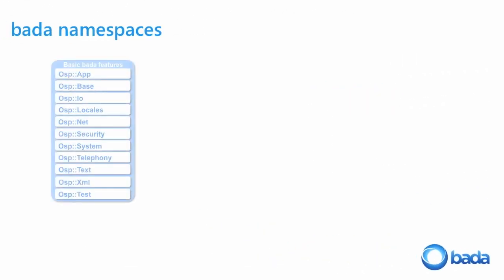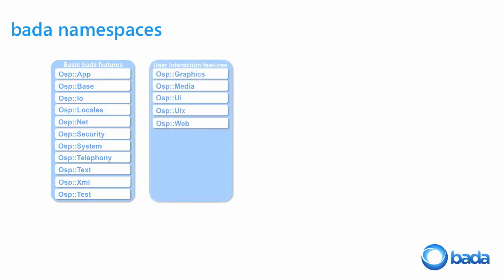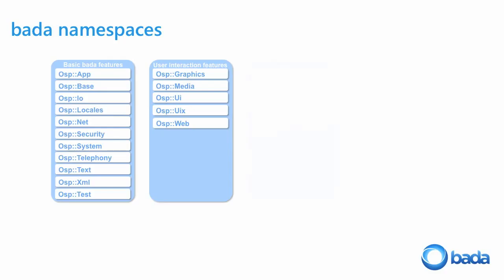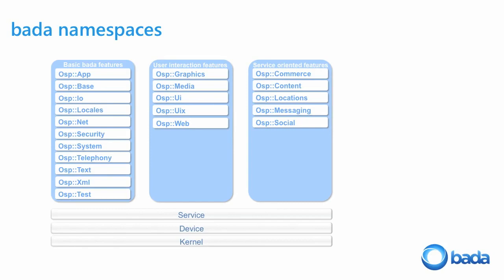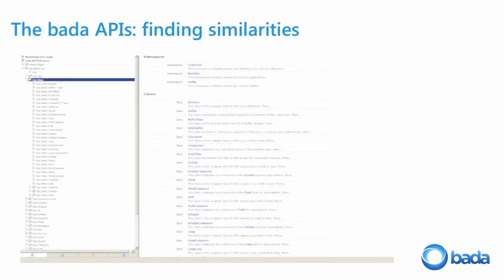Looking at the namespaces: Application, Base, Locales, and Security form the basic features. Then we have user interface features. UIX is the extended features namespace, covering things like face recognition and sensors. Finally, there are the service-oriented features — Commerce, Location, Social, and Content — which work with the Bada server. Social and Locations both have a services sub-namespace. All of this sits at the framework layer; we're just concerned with applications.